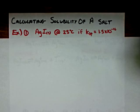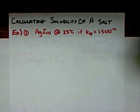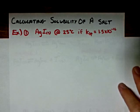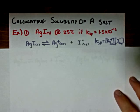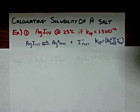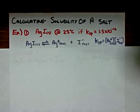In the first example, we have silver iodide solid with a Ksp value of 1.5 times 10 to the negative 16. If that silver iodide solid is placed in pure water, we know that we'll get this equilibrium: the silver iodide solid will be in equilibrium with silver ions and iodide ions. The equilibrium expression says that the Ksp value is equal to the product of the silver ion and iodide ion concentrations.